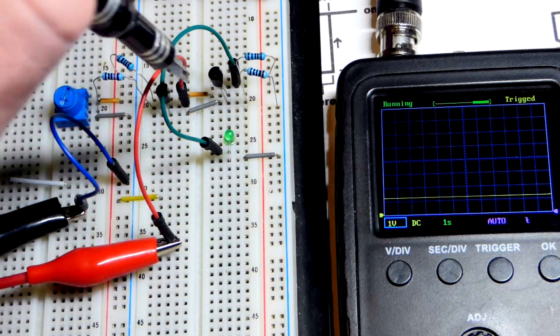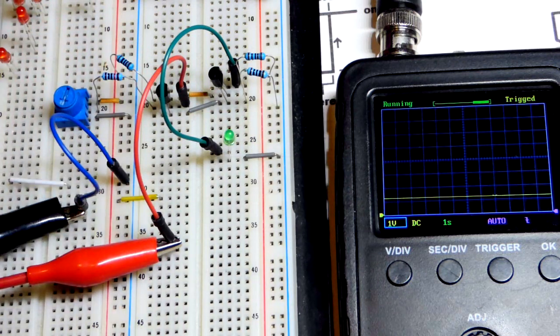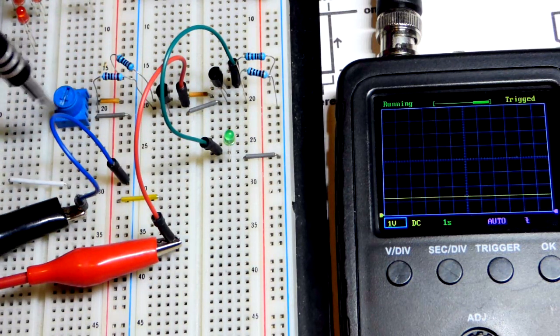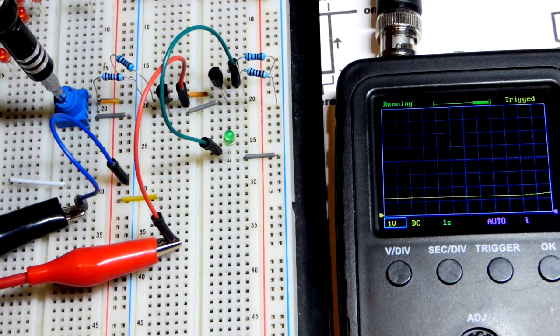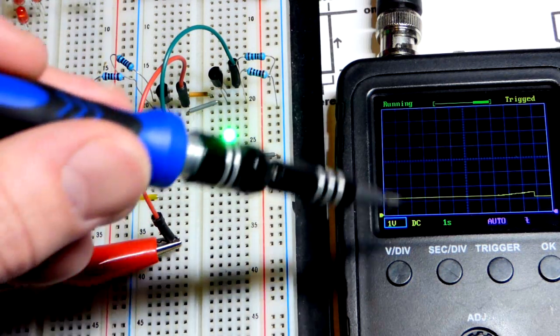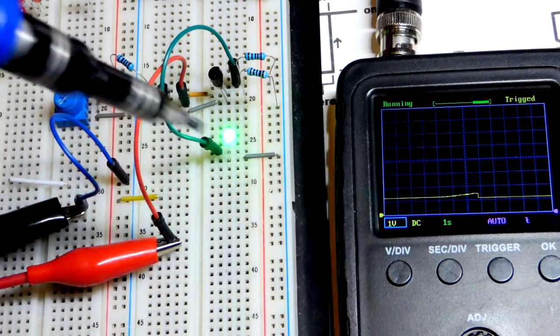We have the red alligator clip here clipped to a jumper going to the base. This is our voltage in relationship to the ground rail. We know from looking at this earlier I have to raise the voltage to get the LED to go on.